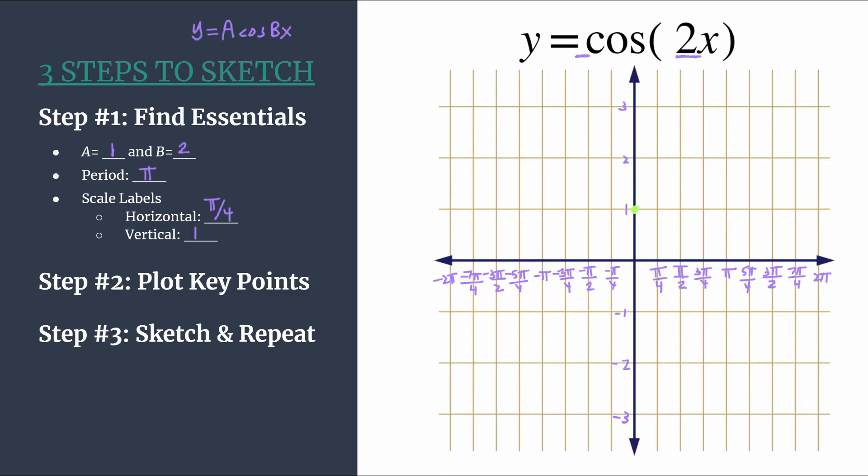And now we can complete our pattern. And remember, we purposely designed this so that each horizontal tick mark will get a key point. So we have maximum, zero at pi over 4. The next point will be a minimum. It happens at pi over 2, and it'll just have the opposite value of our maximum, so the opposite value of A, negative 1. And then our final point in our pattern will be another zero, this time at 3 pi over 4.